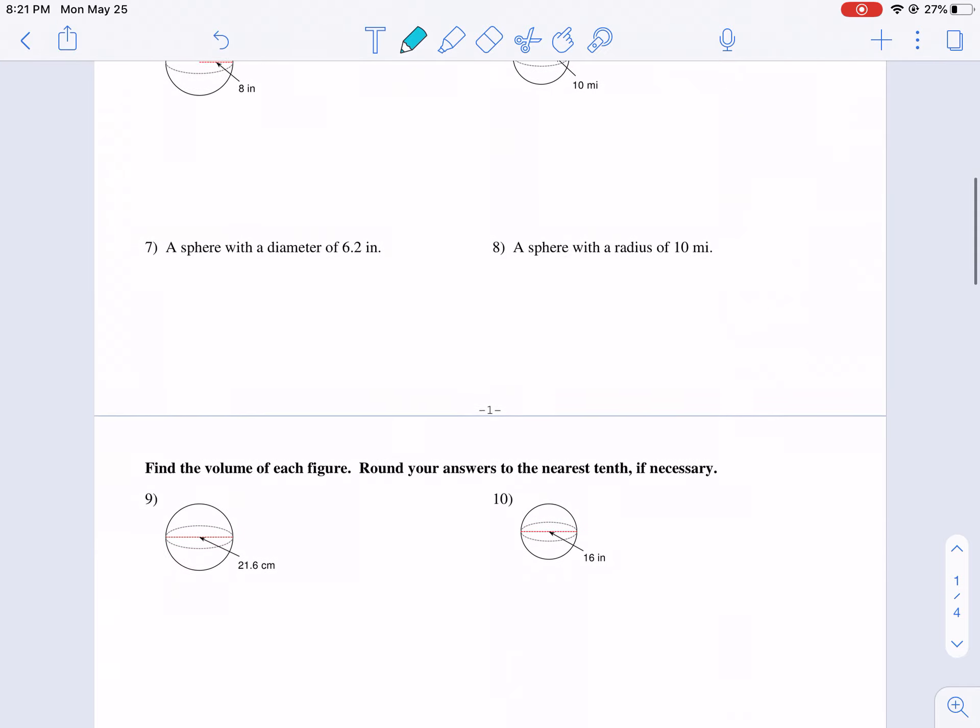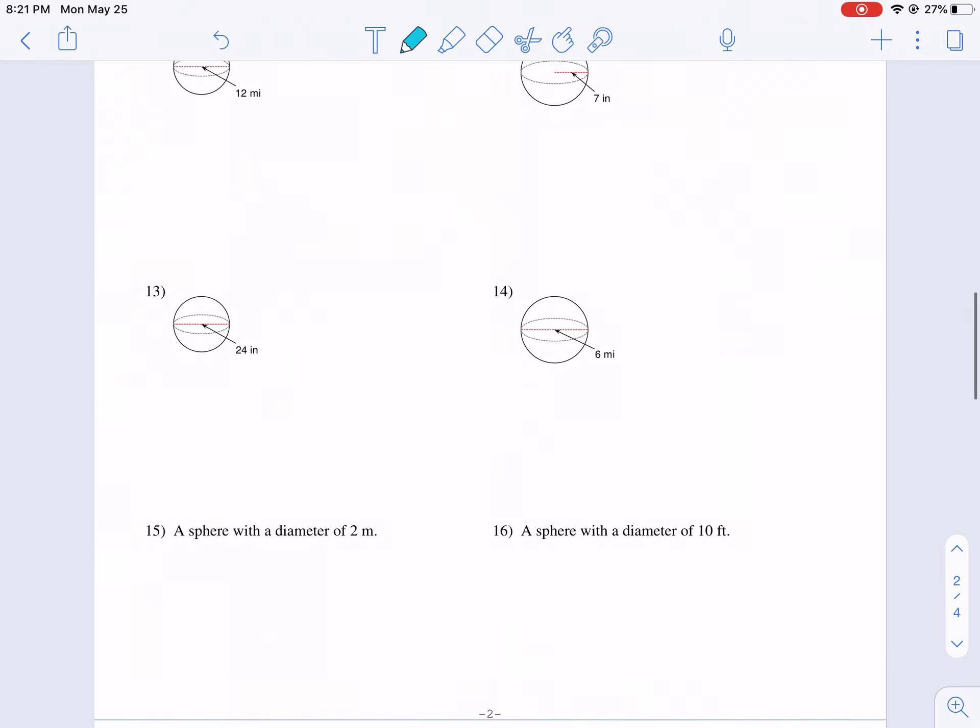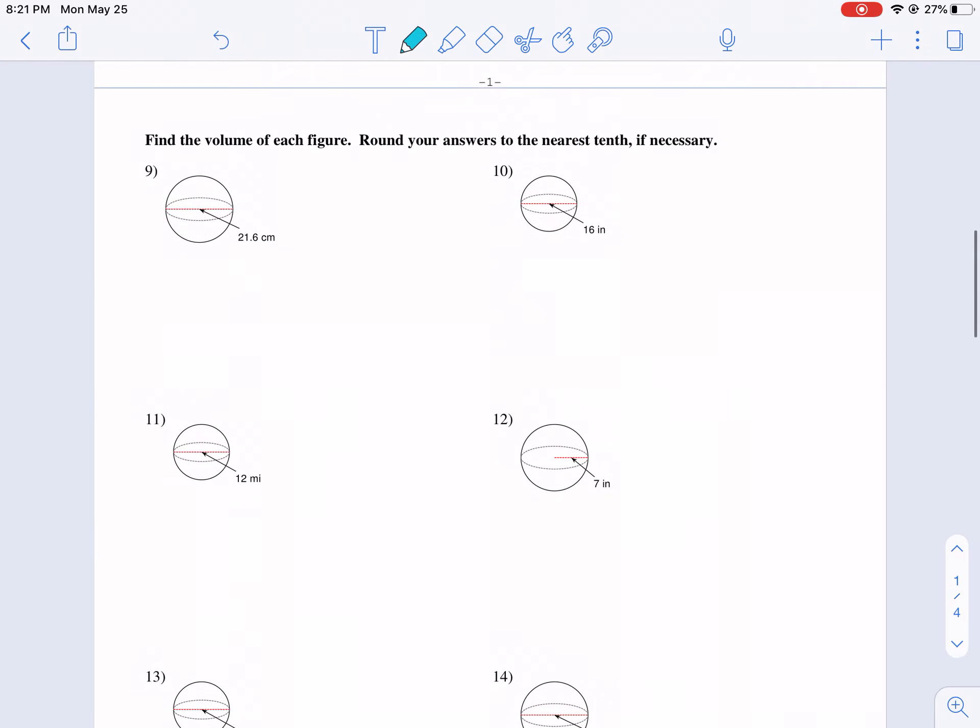Let's go ahead and proceed to the second page. Now we're talking about volume. With volume we're talking about all the space inside in three dimensions. Again, we need to make sure we have the radius, but for volume it is 4/3 πr³.